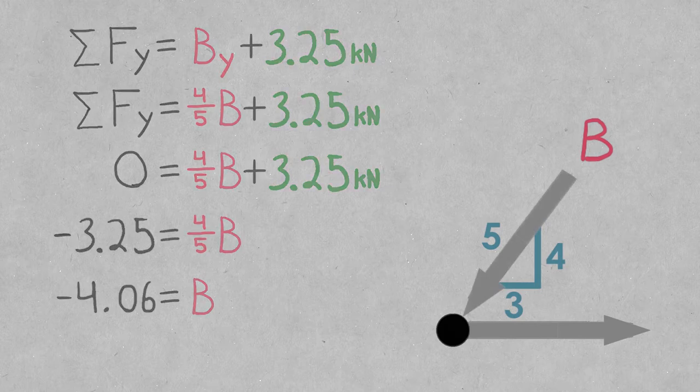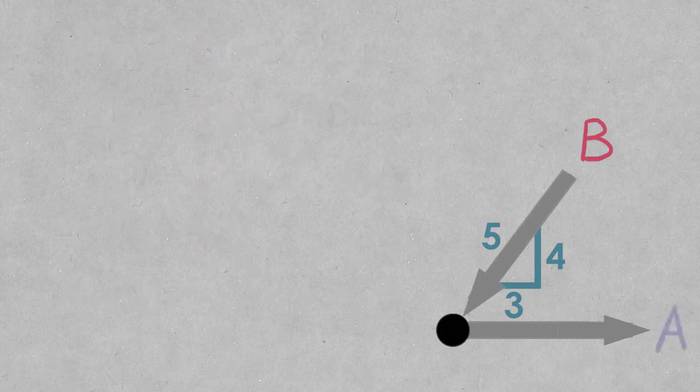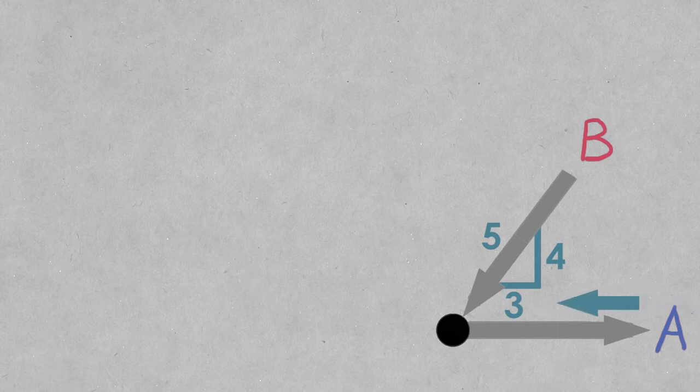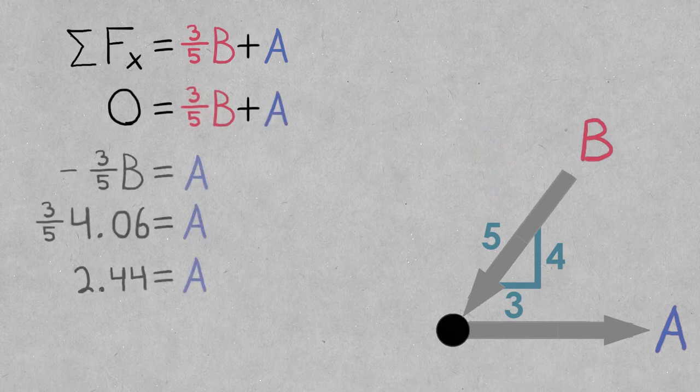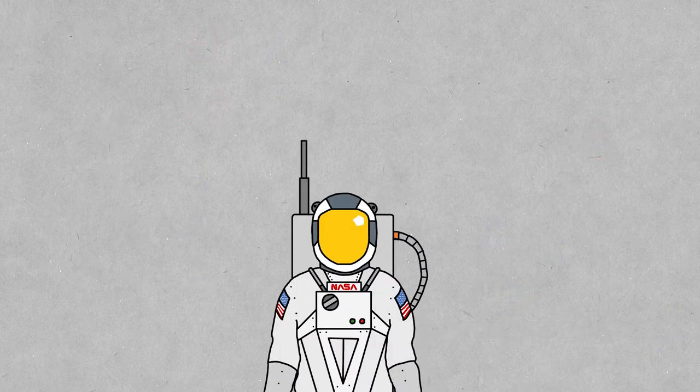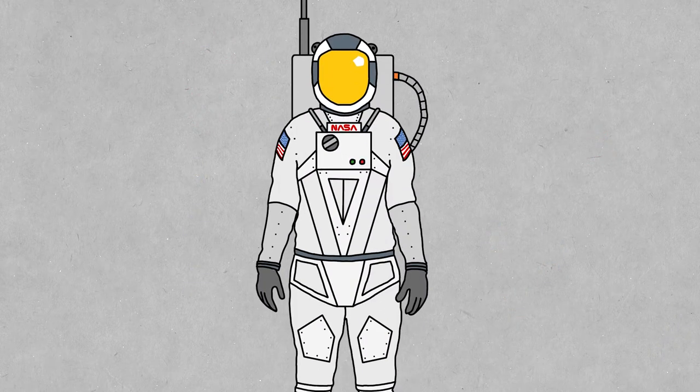Now we can sum the forces in the x direction. This time we have to find the x component of the force B, so we use another ratio. The width over the hypotenuse, which is 3 over 5. We set the equation equal to 0, and we can solve for A. A turns out to be positive, so we can leave the arrow the way it is.